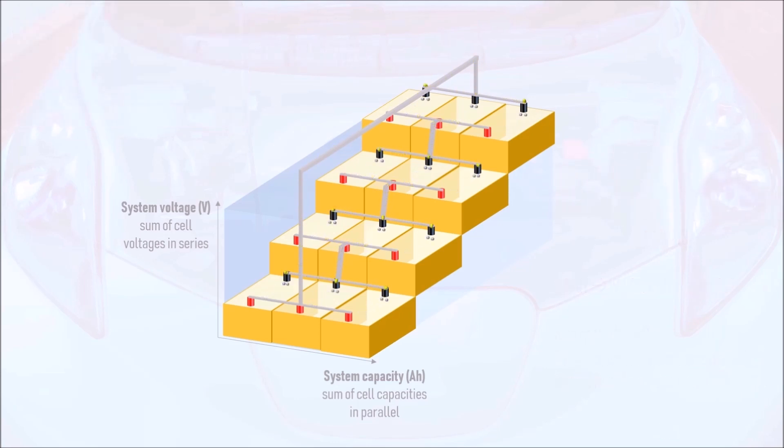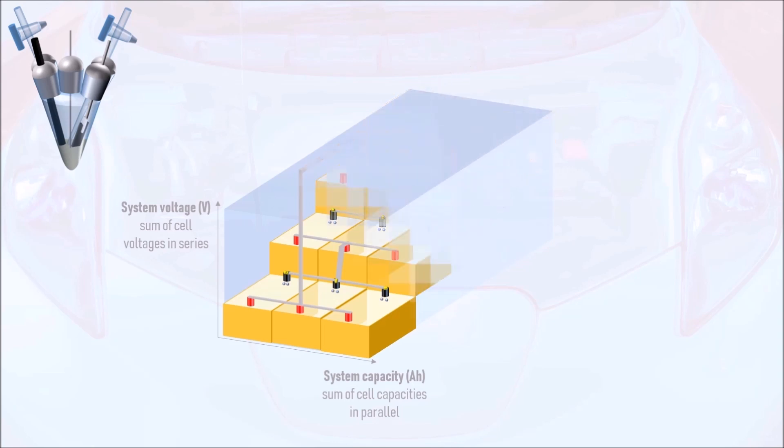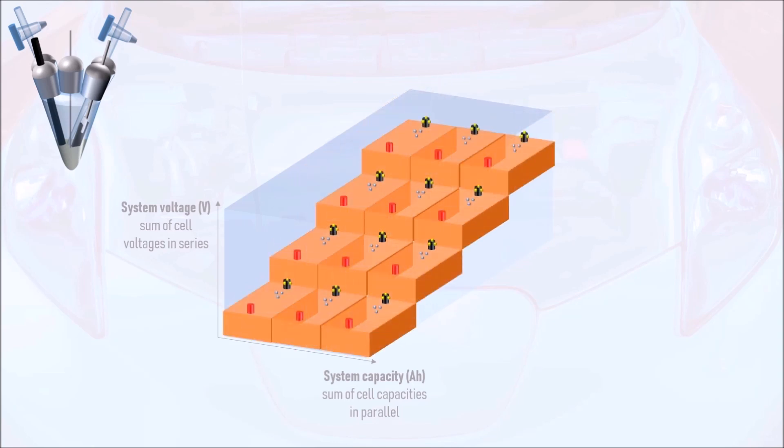Every now and then, there's a major development in the lab and a brand new cell chemistry is commercialised. As this will likely differ significantly from a standard lithium-ion cell that we know today, there's a good chance that the height of the steps in the staircase will be different too. If the cell voltage is lower, and therefore the step height is lower, then we will have insufficient system voltage if we have the same number of steps in the staircase.